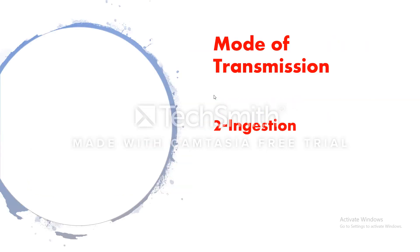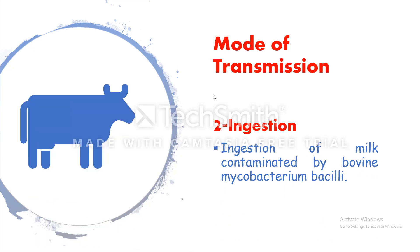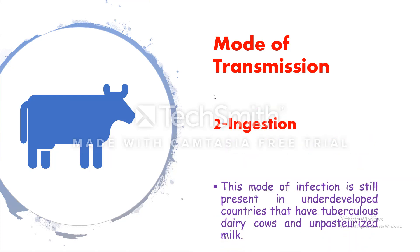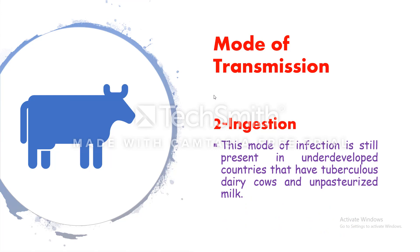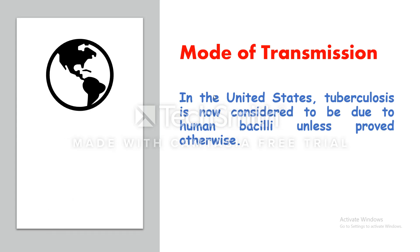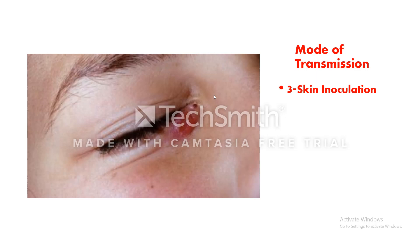The second mode of transmission is ingestion of milk contaminated by bovine Mycobacterium bacilli. In developed countries, disease control in dairy herds and pasteurization of milk have eradicated this mode of transmission. However, it is still present in underdeveloped countries with tuberculous dairy cows and unpasteurized milk. In the United States, tuberculosis is now considered to be due to human bacilli unless proved otherwise.